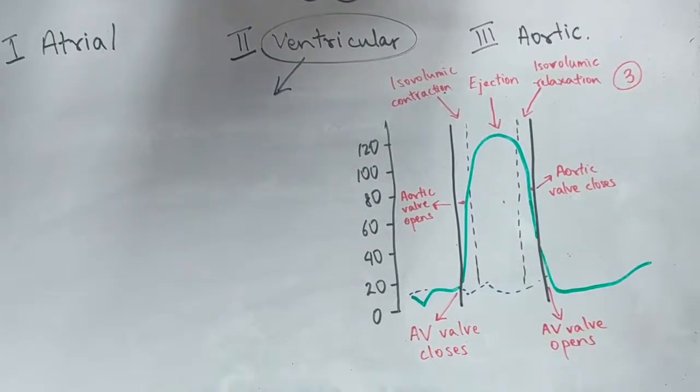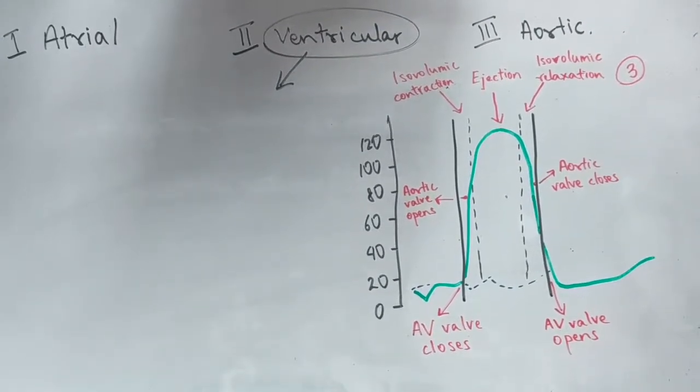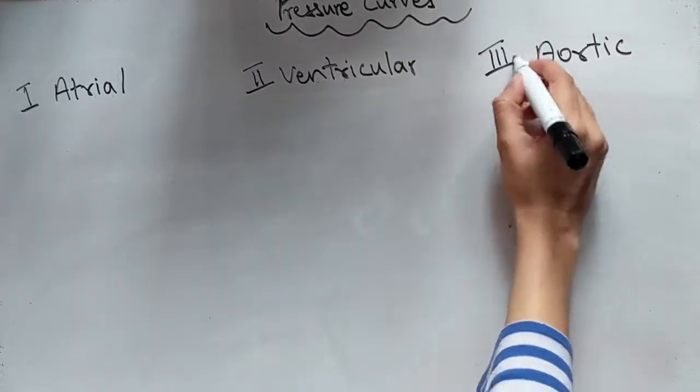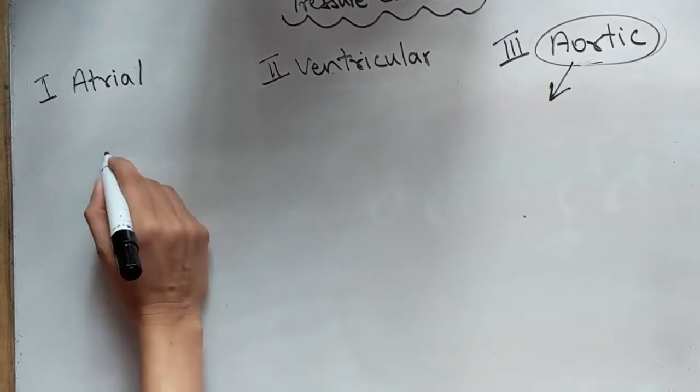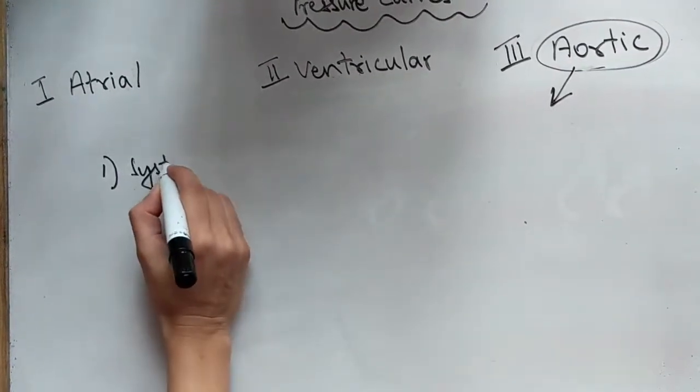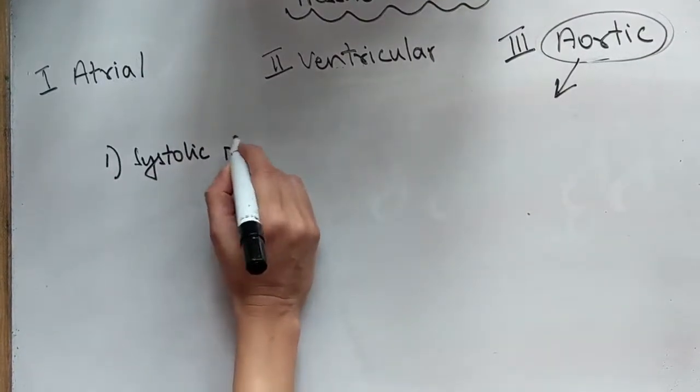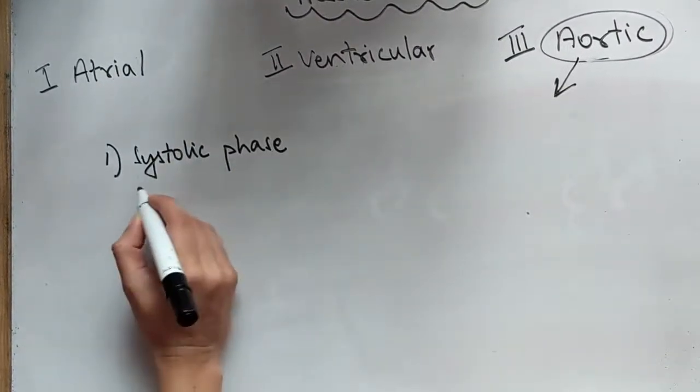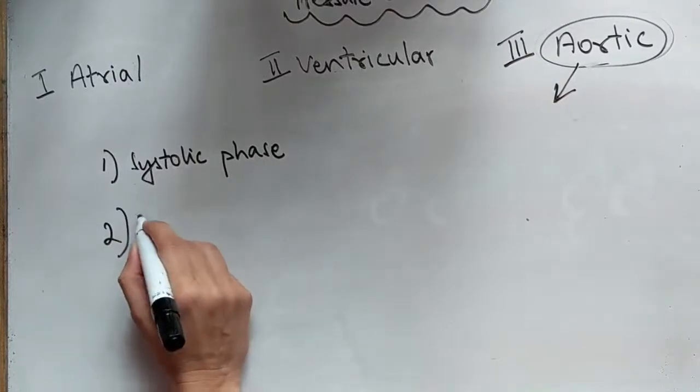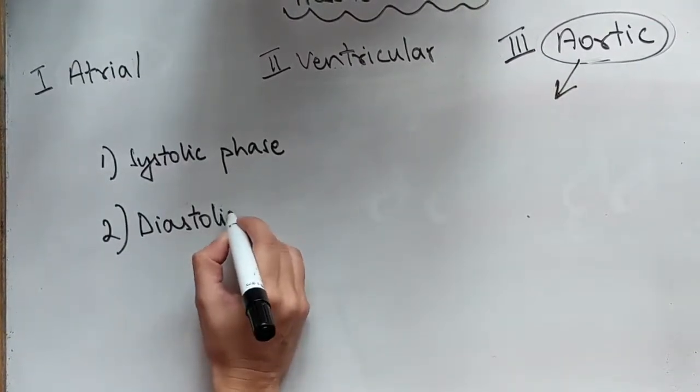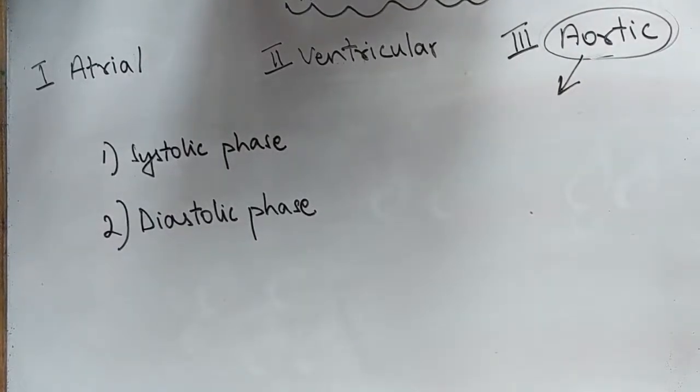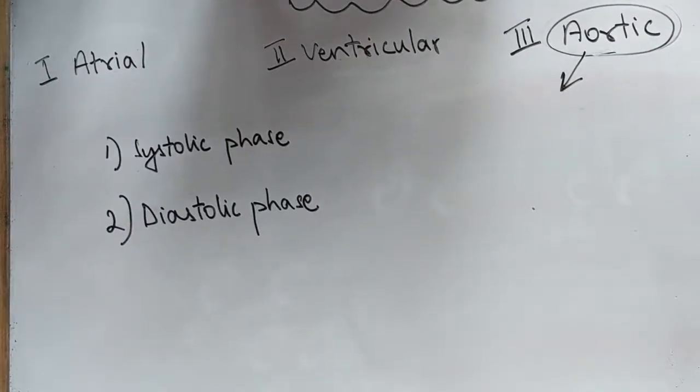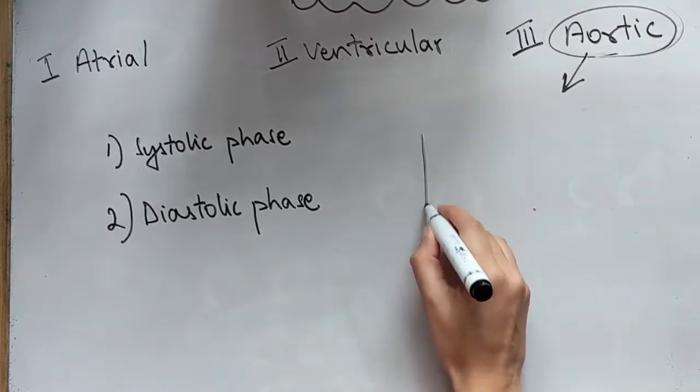Moving on to the last one you've got the aortic pressure curve. So you need to remember two things again. You've got the systolic phase and the diastolic phase. Now the systolic phase is the ejection wave and the diastolic phase is the reflected wave. And this is what the graph looks like. You've got two peaks.